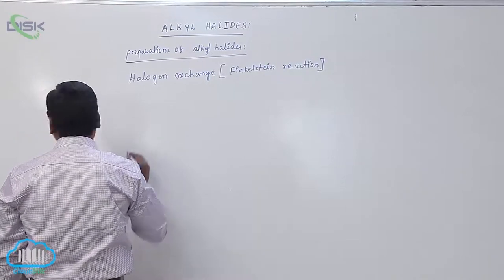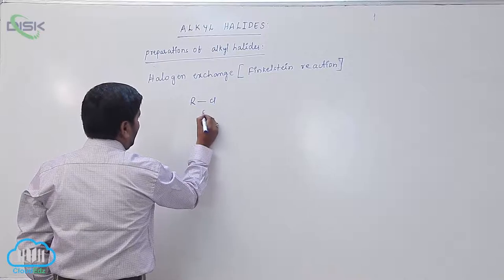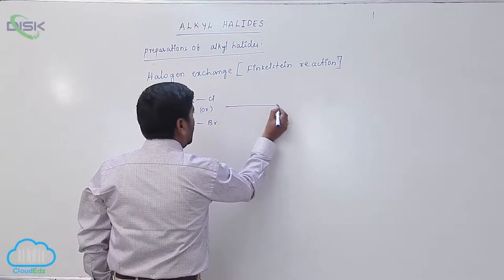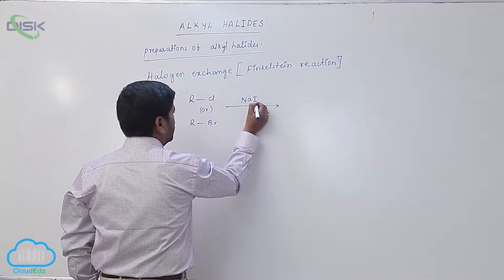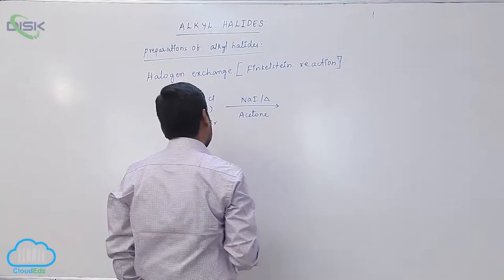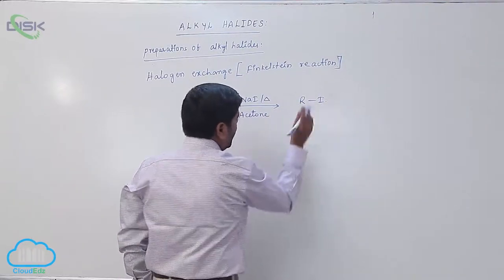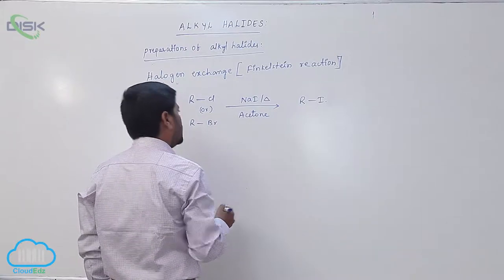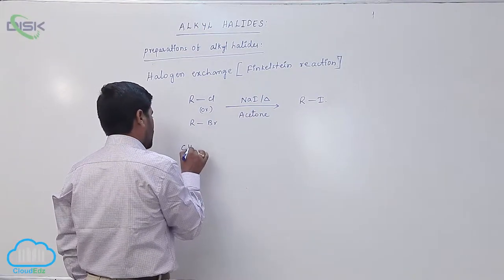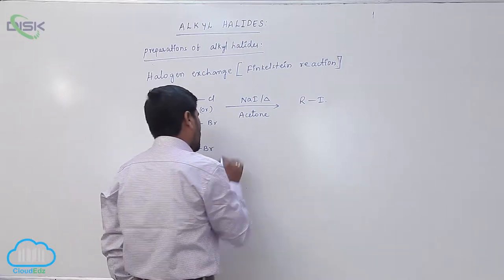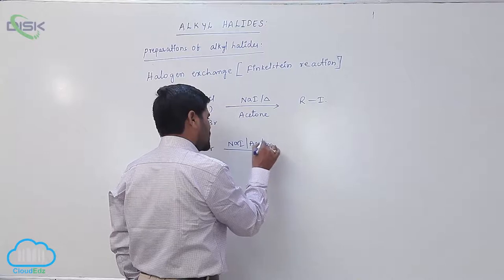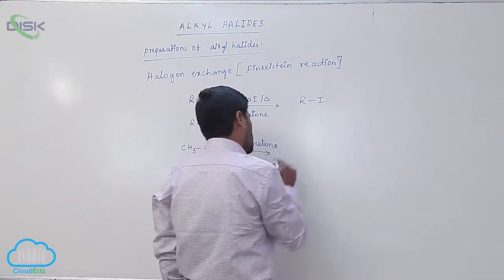In the Finkelstein reaction, alkyl chlorides or alkyl bromides react with sodium iodide in the presence of acetone as a solvent to form alkyl iodide. This particular reaction is known as the Finkelstein reaction. For example, methyl bromide reacts with sodium iodide in the presence of acetone as a solvent.